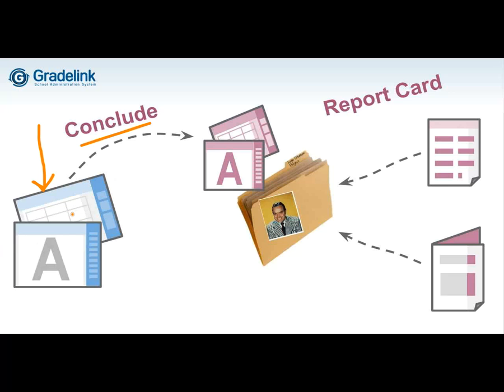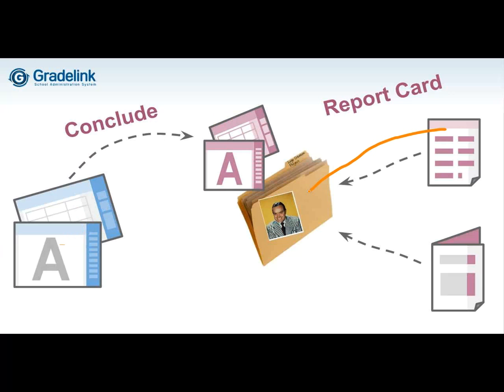Whatever the student got in, say, quarter one has now been finalized, and it gets put in the student's queuing folder — represented by this manila folder. Report cards and transcripts are types of reports that look at finalized grades. They do not look at the grade sheet; they only look at the student's queuing folder. Both the report card and the transcript look at that final queuing folder to figure out what to display.